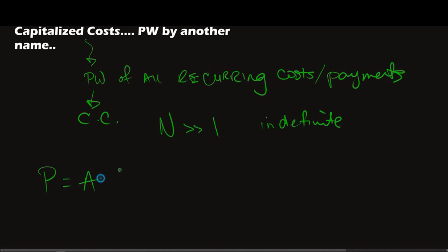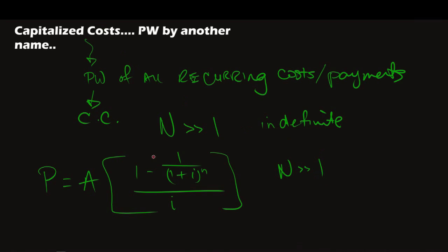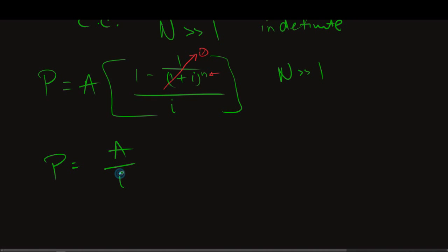Starting from the formula P = A × [(1 - (1+i)^-n) / i], we ask: what happens when n is really large? As n grows, the factor (1+i)^-n approaches 0 and drops out, leaving us with P = A/I. So for indefinite time frames — or those where the number of periods is quite large, say 30 years or greater — capitalized cost CC = A/I.